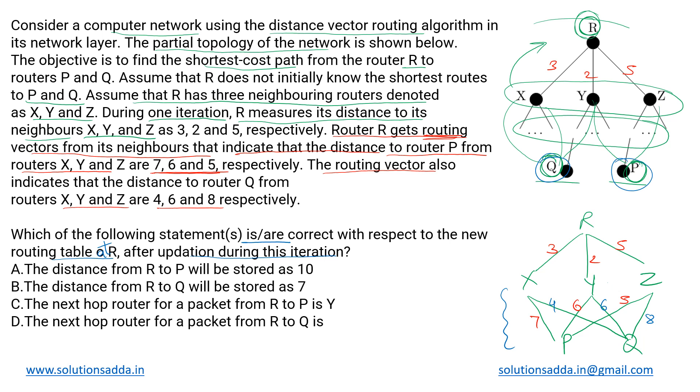So what it will do is choose the minimum of all the distances that it is getting. For node P it will choose the minimum of the distances R-X-P, R-Y-P and R-Z-P. These are the three paths it is having. So it will choose the minimum cost path among these three. For R-X-P, the cost is R to X is 3 and then X to P is 7, so in total that is 10.